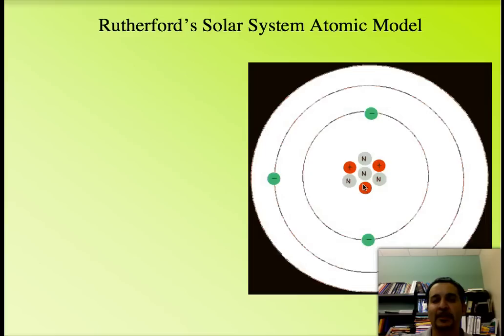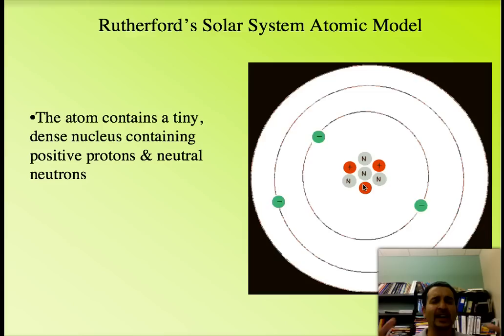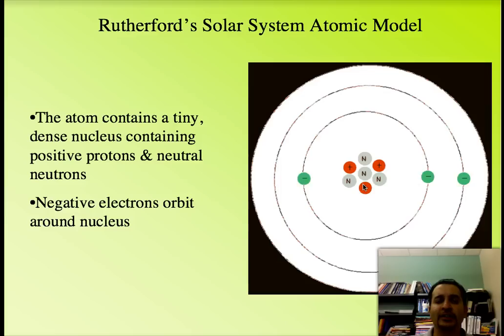Rutherford puts it all together in a kind of solar system atomic model, an idea in which we have a nucleus that is orbited by the electrons. The atom contains a tiny nucleus that has the positive and the neutral charges, and it contains most of the mass of the atom. In addition, you have the electrons orbiting around the nucleus.